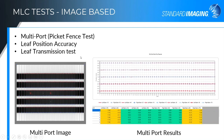For MLC image-based tests, the picket fence test, leaf position accuracy, and leaf transmission tests are available. The software finds those leaf edges and reports on them for both the A bank and the B bank — or left and right bank — giving results of leaf edges being out of position throughout the field.